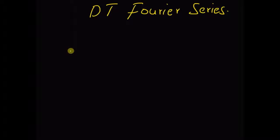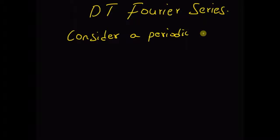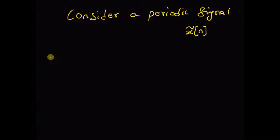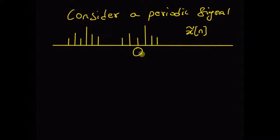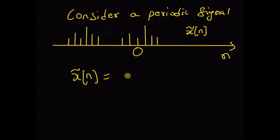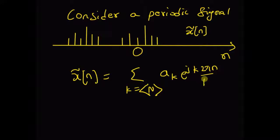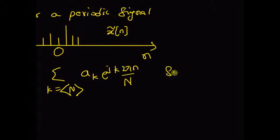Consider a periodic signal x̃[n], that is a discrete periodic signal that might look like the following. Given this periodic signal x̃[n], the discrete time Fourier series synthesis equation is given by: x̃[n] = summation over k of a_k times e^(jk·2π·n/N). This summation gives the synthesis equation for discrete time Fourier series.